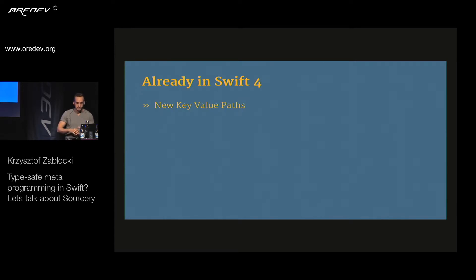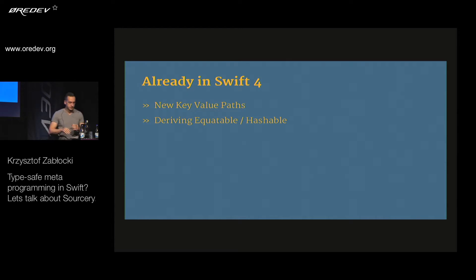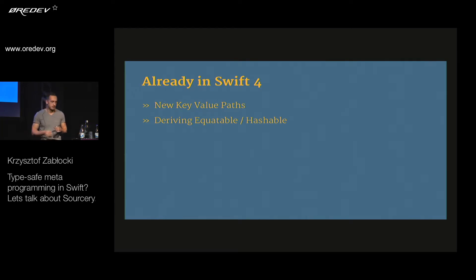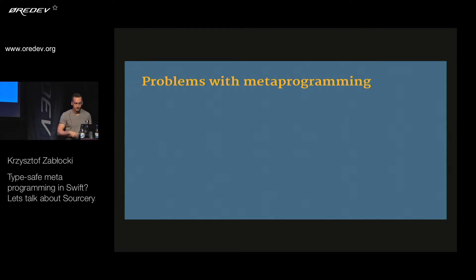Already in Swift 4 we have new key-value paths, and deriving Equatable and Hashable is rolled out partially — available for value types, and some enum implementation has been merged but isn't fully completed. The thing with this is it's all or nothing. There's no way to control the generated code, meaning you cannot fine-tune it. If you want to skip a variable for equality, you have to write your own equality. It's either all variables or no variables — not ideal.